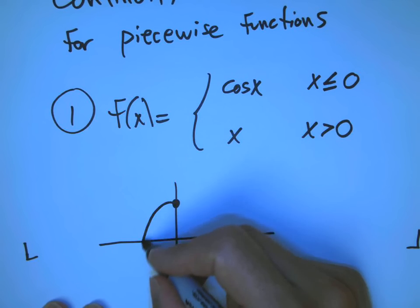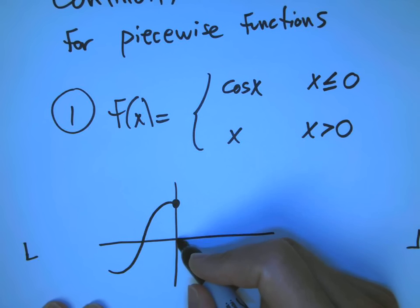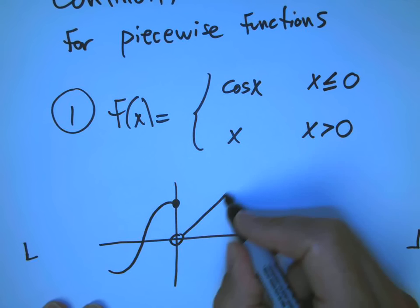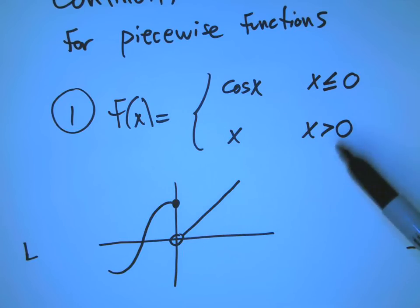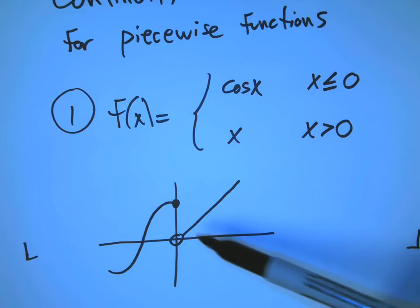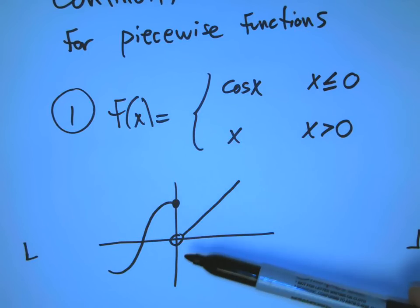They often, when they pose these problems in the book, they often say calculate this limit, blah blah blah, and then at the end they say sketch the function. Well, you should do the sketch first if possible, because that's where you get some intuition as to what's going on. So here's cosine, and here's x.